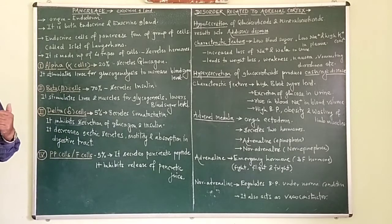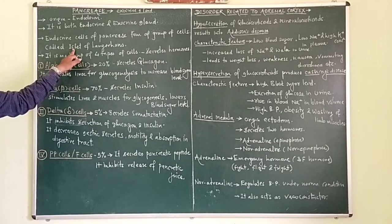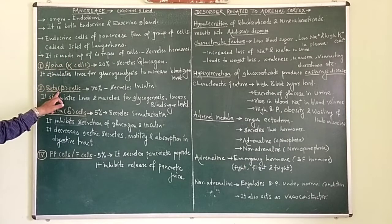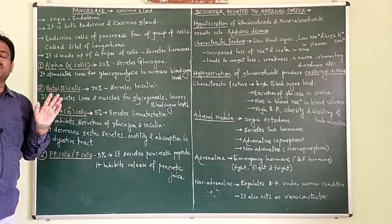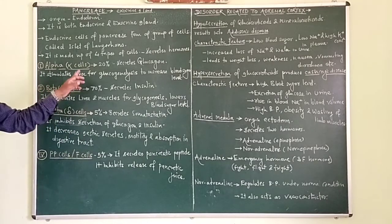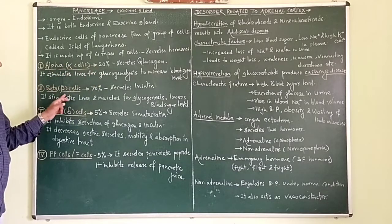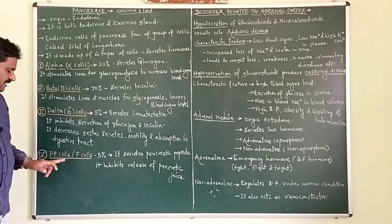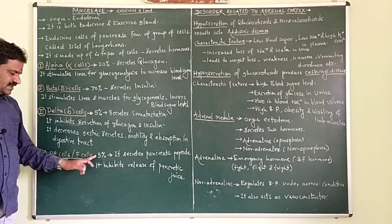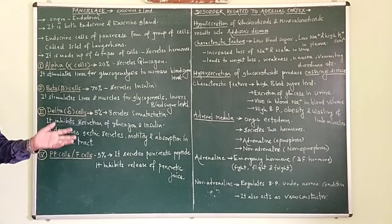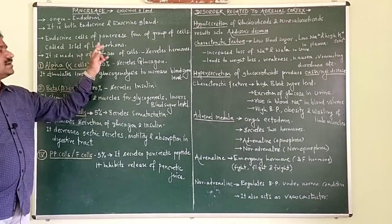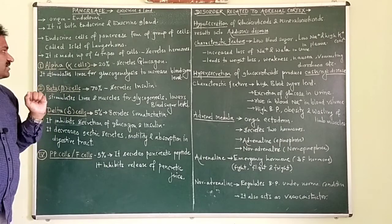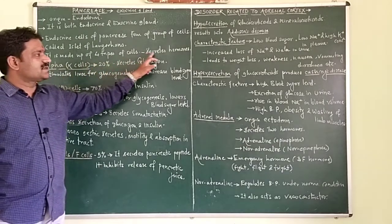The Islets of Langerhans contain endocrine cells that secrete hormones. Four different kinds of cells are present: alpha cells (20%), beta cells (70%), delta cells (5%), and PP cells — also called polypeptide cells or F cells (5%). Together, these cells form the endocrine structure called the Islets of Langerhans.